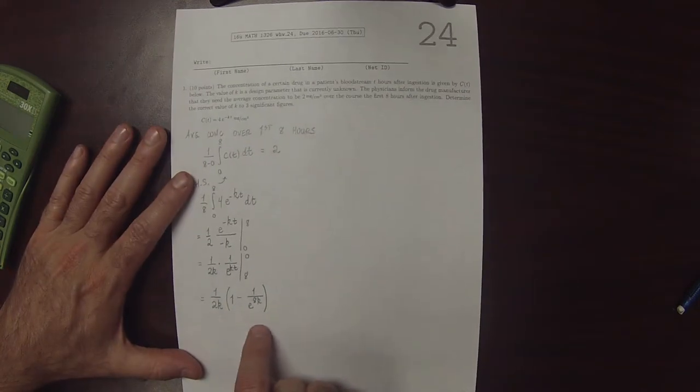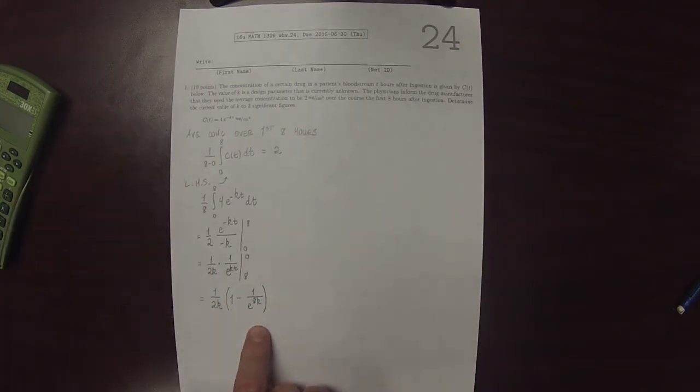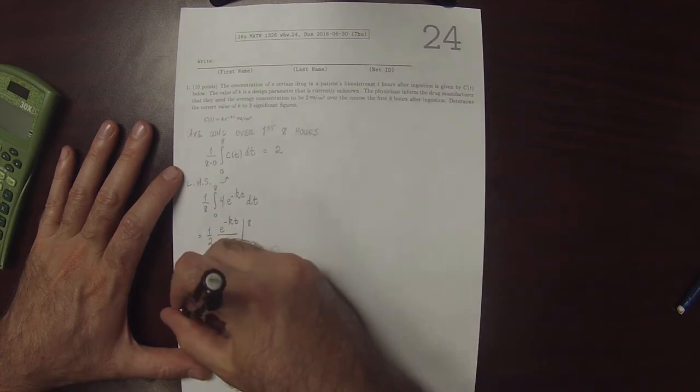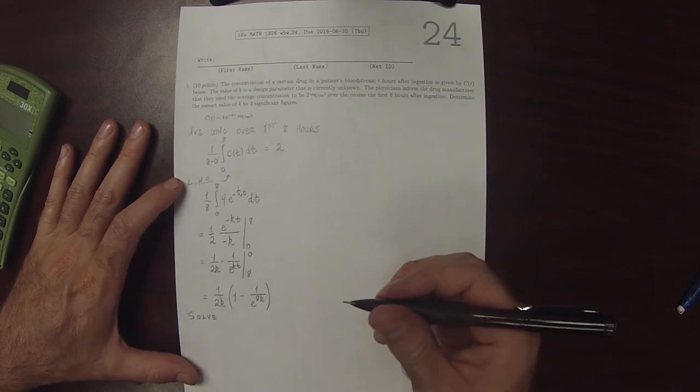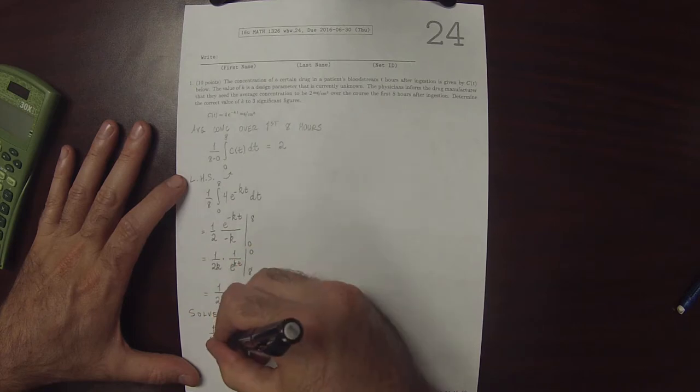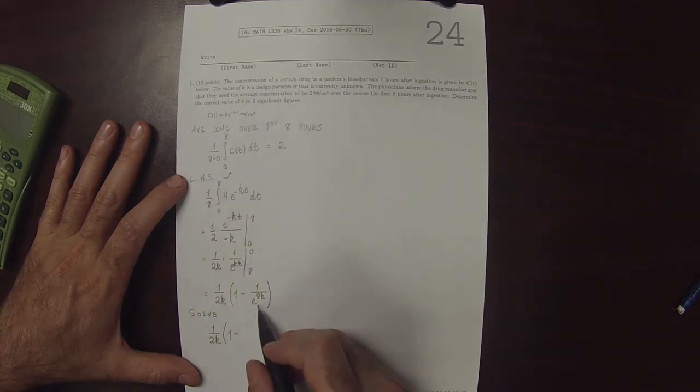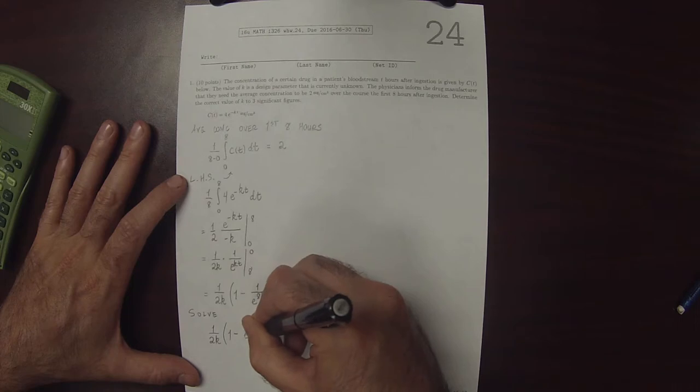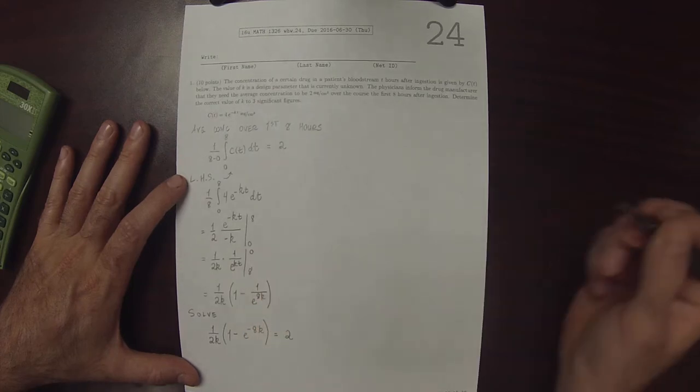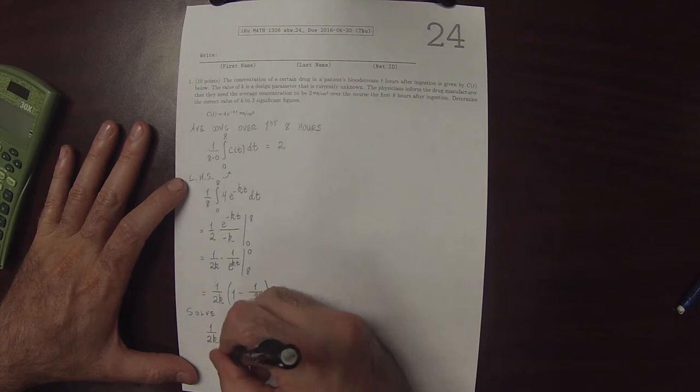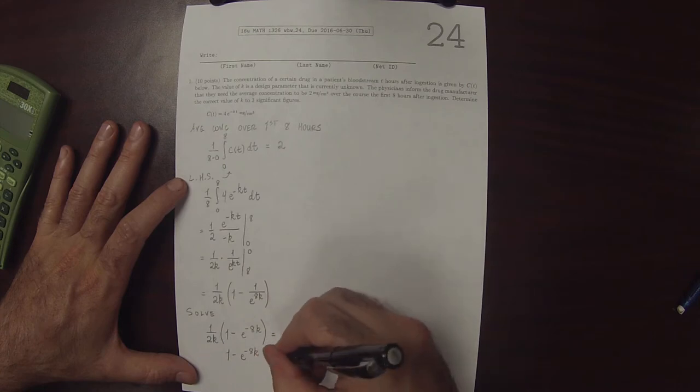So this is the average concentration over 8 hours as a function of K. And we need this average concentration to be 2. So what we must do is solve 1 divided by 2K multiplied by 1 minus e to negative 8K equals 2. So I'll multiply both sides by 2K to get 1 minus e to negative 8K is 4K.